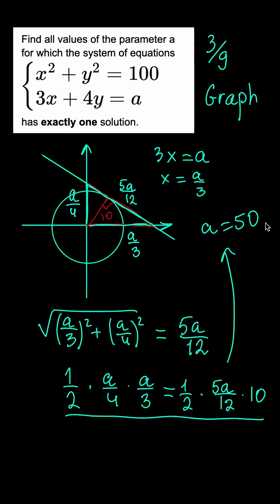which is one of the two values of the parameter a that we were looking for. The other is a equals minus 50 when the line is tangent to the circle from the other side. And that's the answer.